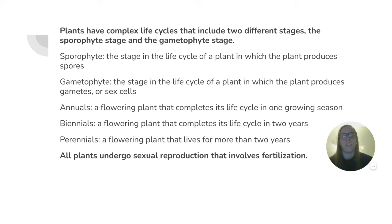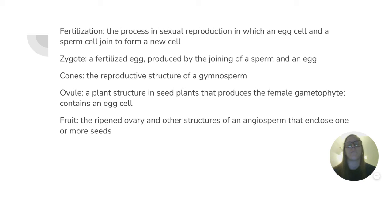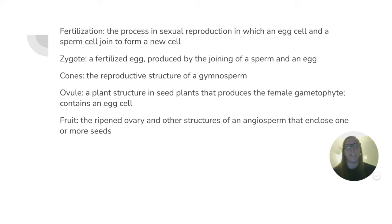All plants undergo sexual reproduction that involves fertilization. Fertilization is the process in sexual reproduction in which an egg cell and a sperm cell join to form a new cell. A zygote is a fertilized egg produced by the joining of a sperm and an egg. Cones are the reproductive structure of a gymnosperm. An ovule is a plant structure in seed plants that produces the female gametophyte and contains an egg cell. Fruit is the ripened ovary and other structures of an angiosperm that enclose one or more seeds.